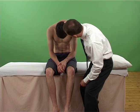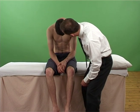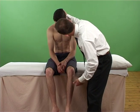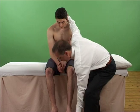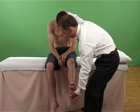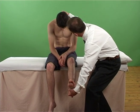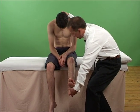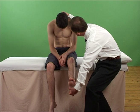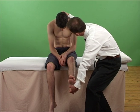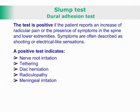If symptoms are still not provoked, the knee is passively extended with the ankle in dorsiflexion. The test is positive if the patient reports an increase of radicular pain or the presence of symptoms in the spine and lower extremities.